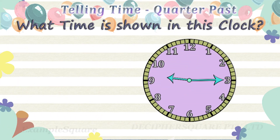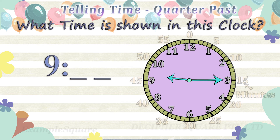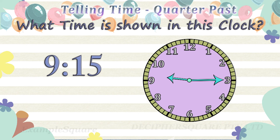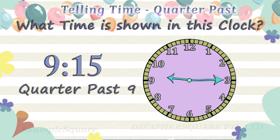What time is shown in this clock? The hour hand is pointing in between 9 and 10, so the time is 9 hours and some minutes. The minute hand is pointing at 3, referring to 15 minutes. The time is 9:15, that is 15 minutes past 9. 15 minutes is quarter of an hour, so the time is quarter past 9.